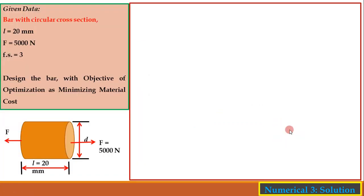These optimum design problems are solved using Johnson's method of optimum design, which is based on a total of 9 steps. To solve this problem we have to go through all 9 steps one by one.